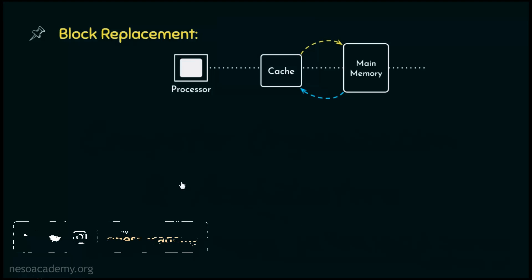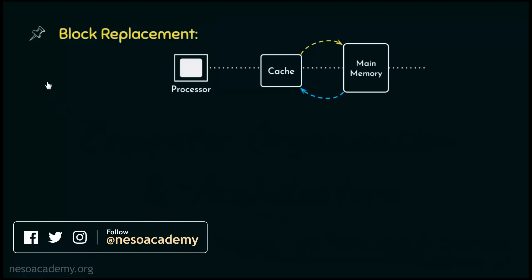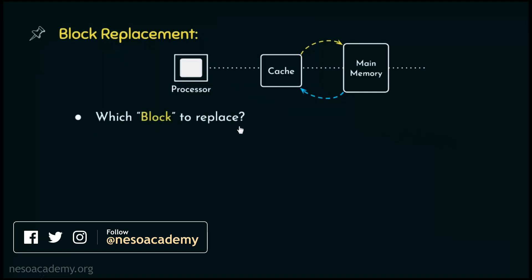Now in the previous session, during our discussion of cache design, we came across the block replacement phase. Basically, it's required when the cache suffers from either a capacity or conflict miss. In any of these two scenarios, we evict one block from the cache and make space for the newly requested block. Now during this phase, we came across a very vital question: which block to replace?